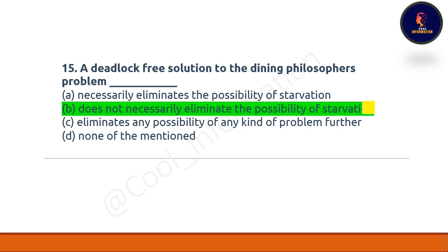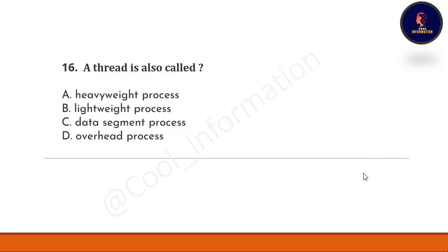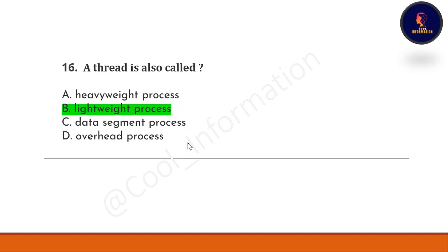Question 16: a thread is also called — Option A: heavyweight process. Option B: lightweight process. Option C: data segment process. Option D: overhead process. The correct option is B — lightweight process. A thread is also called a lightweight process.